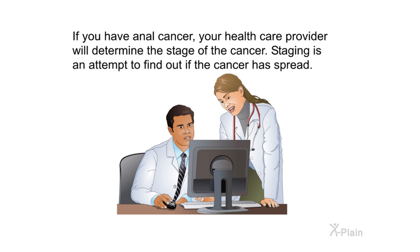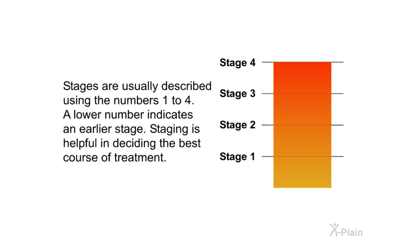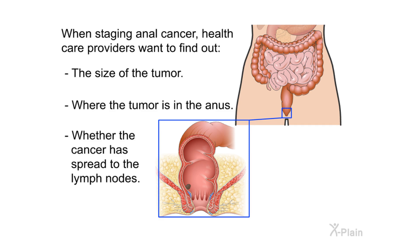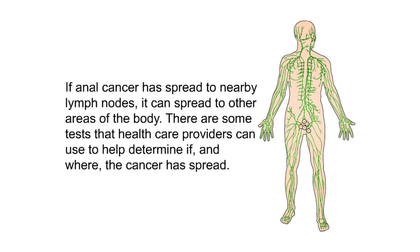If you have anal cancer, your health care provider will determine the stage of the cancer. Staging is an attempt to find out if the cancer has spread. Stages are usually described using the numbers 1 to 4; a lower number indicates an earlier stage. Staging is helpful in deciding the best course of treatment. When staging anal cancer, providers want to find out the size of the tumor, where the tumor is in the anus, and whether the cancer has spread to the lymph nodes.